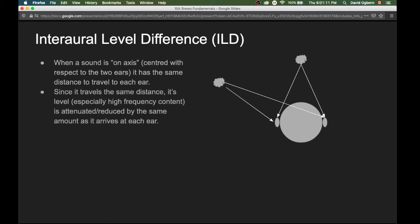Since it travels the same distance, the level of that signal will be attenuated or reduced by the same amount as it arrives at each ear. These two sound signals will be attenuated by the same amount. So they'll arrive with the same level.